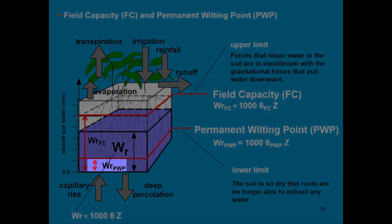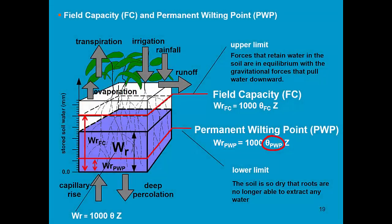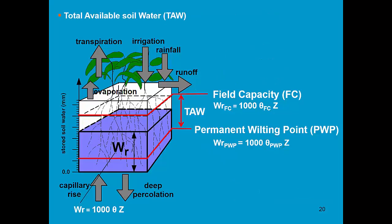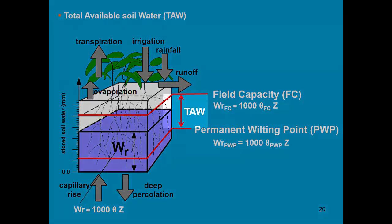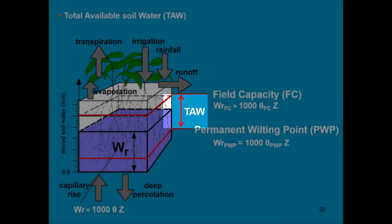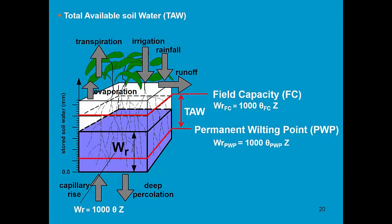The water content at permanent wilting point is given by 1000 times theta times z, where theta is the soil water content at the permanent wilting point. Since field capacity is the upper limit and permanent wilting point the lower limit, the totally available water is the water content in the root zone between field capacity and permanent wilting point. Water above field capacity drains out; water below wilting point is too strongly attached to the soil matrix. So tau is the amount of water between field capacity and permanent wilting point.